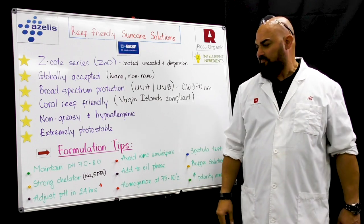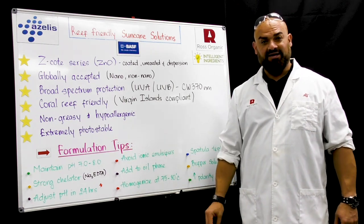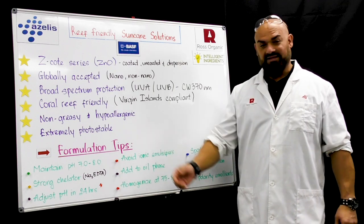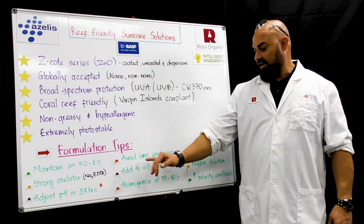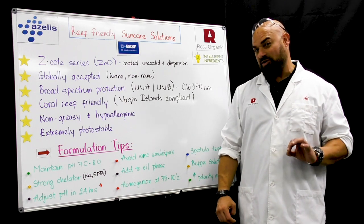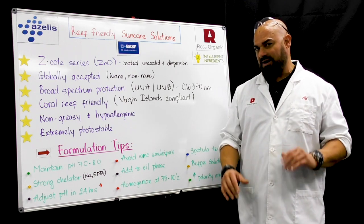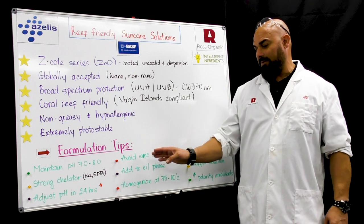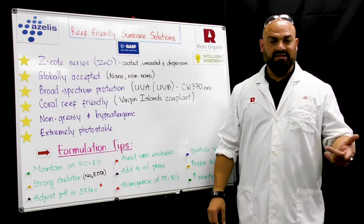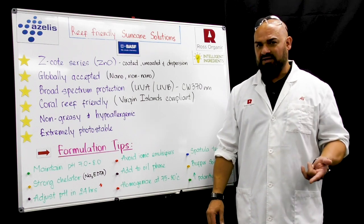Keep it simple. Use a strong chelator such as disodium EDTA or tetrasodium EDTA. Those chelators do help with the stability. Avoid ionic and cationic emulsifiers. If you're not careful, you might run into stability issues. We recommend working with non-ionic emulsifiers and thickeners like xanthan gum, hydroxyethyl cellulose.